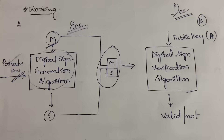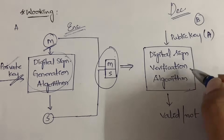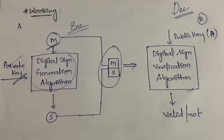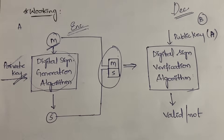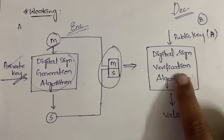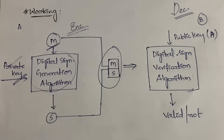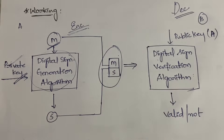The receiver performs the decryption process using the public key of A. The private key of A is held only by A — it is not shared with anyone. Since the private key of A was used at the encryption end, the public key of A is used at the decryption end. The receiver takes the public key of A along with the combined message and feeds it into the digital signature verification algorithm.